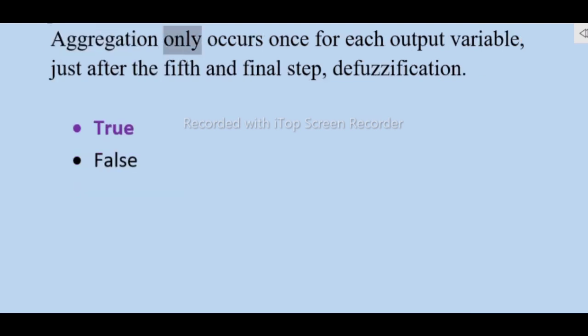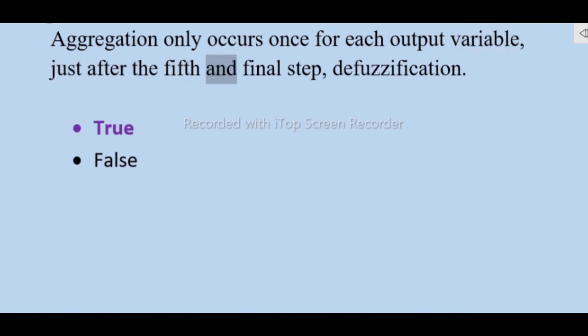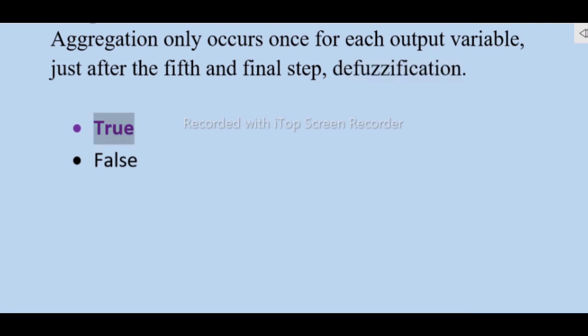Aggregation only occurs once for each output variable, just after the fifth and final step of defuzzification — true.